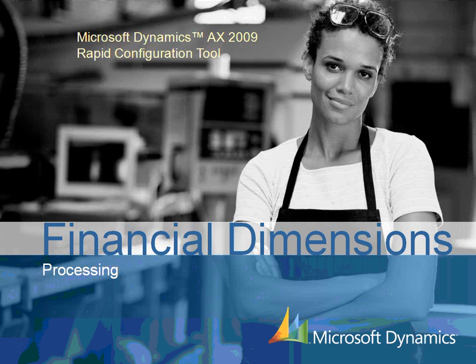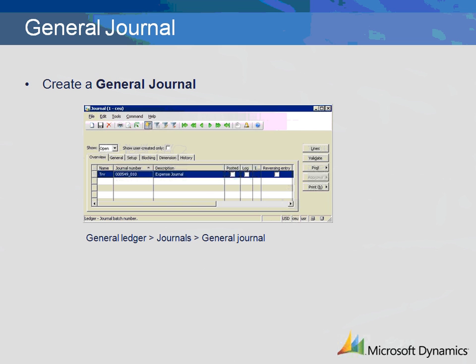This demonstration will explain how to use financial dimensions when processing transactions in Microsoft Dynamics AX 2009. We will use the General Journal in the General Ledger module to demonstrate the validation rules that are set up in the chart of accounts.